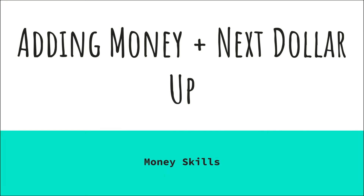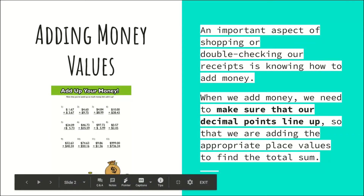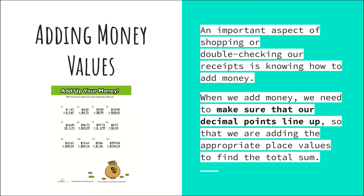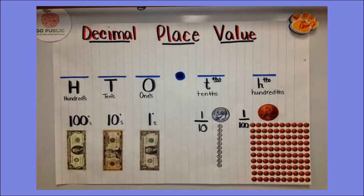An important aspect of shopping or double-checking our receipts is knowing how to add money. When we add money, we need to make sure that our decimal points line up so that we are adding the appropriate place values to find the total sum. On the worksheet under the main title 'Adding Money Values,' they have aligned all of the place values starting from right to left.